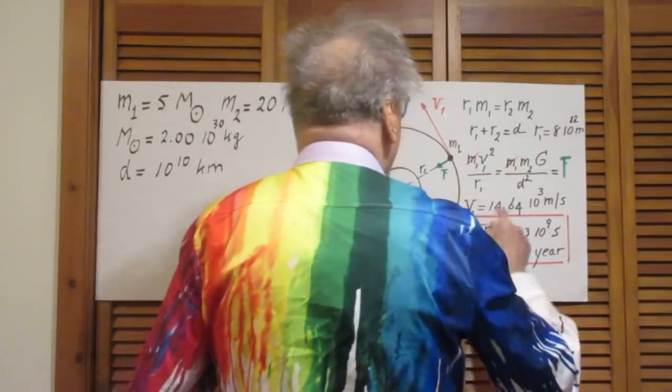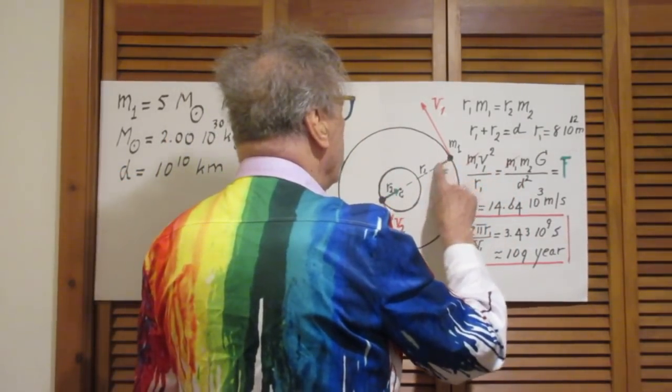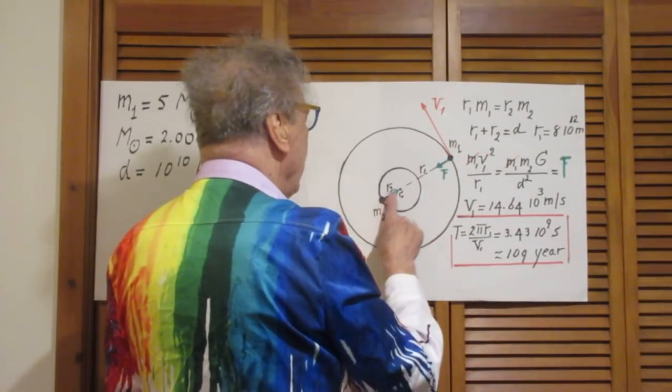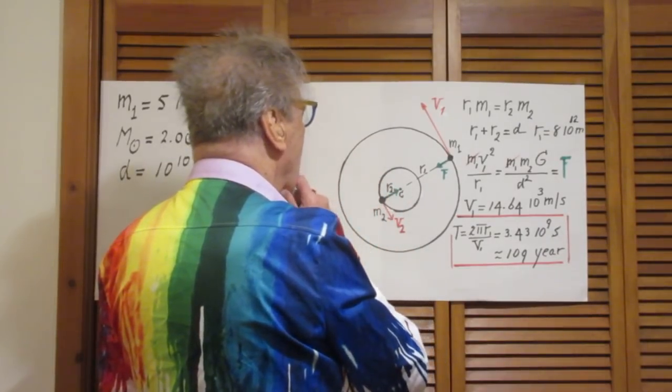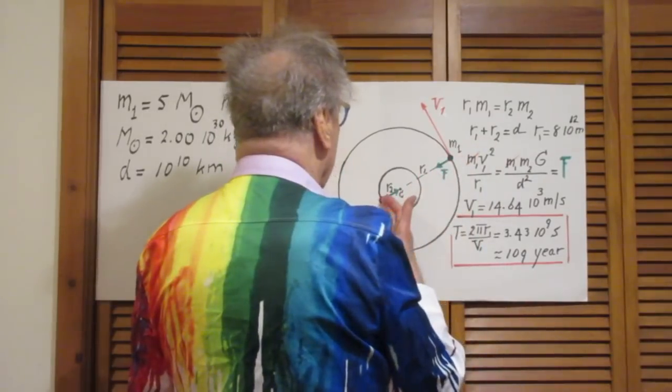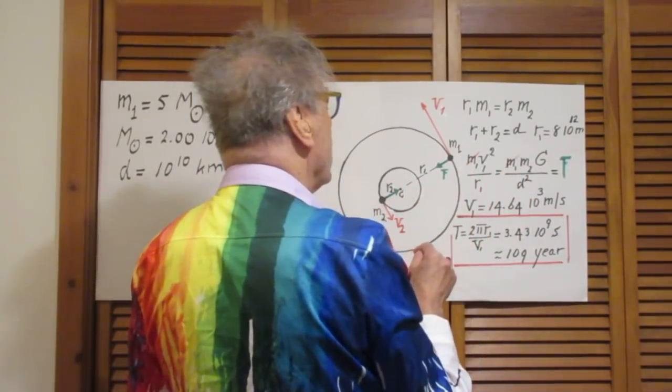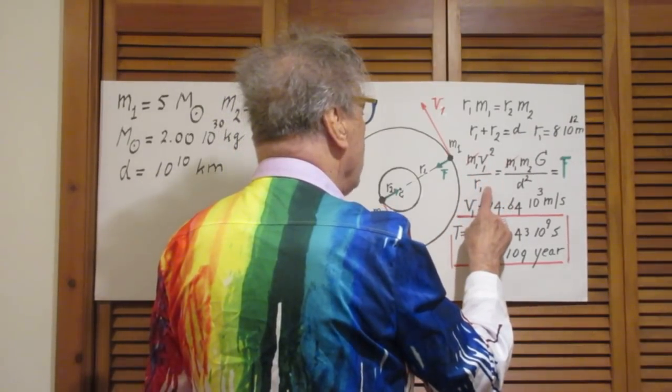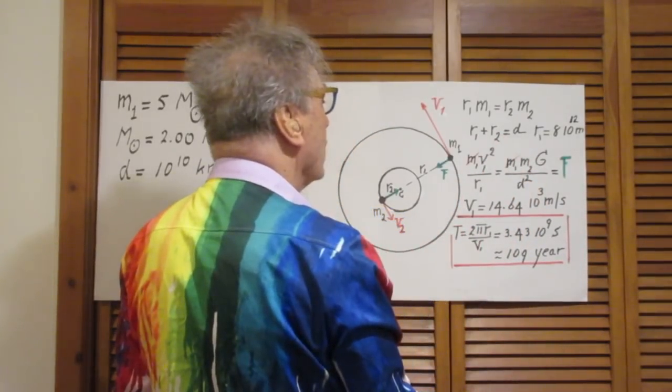Now, since they are in circular orbits, this force here is the centripetal force on m1, and this force here is the centripetal force of m2. You could have picked m2. I picked m1. It makes no difference. The centripetal force on m1 is m1 v1 squared divided by r1, and that's equal to the gravitational force.